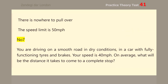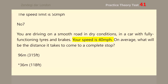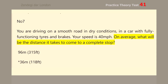Number 7. You are driving on a smooth road in dry conditions, in a car with fully functioning tires and brakes. Your speed is 40 mph. On average, what will be the distance it takes to come to a complete stop?